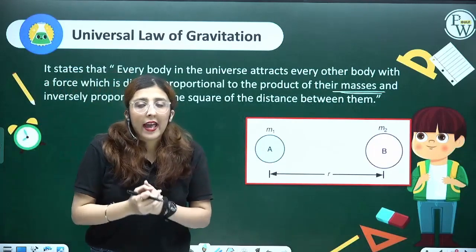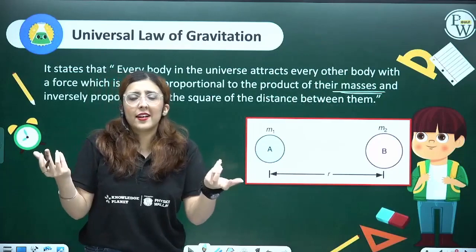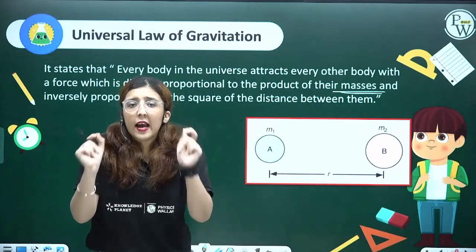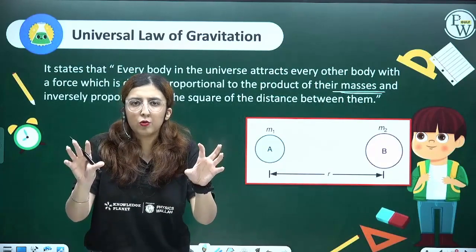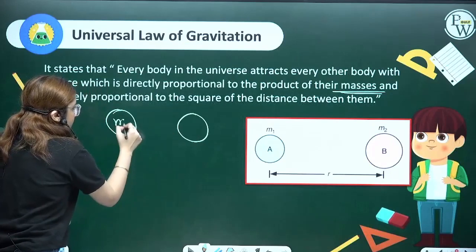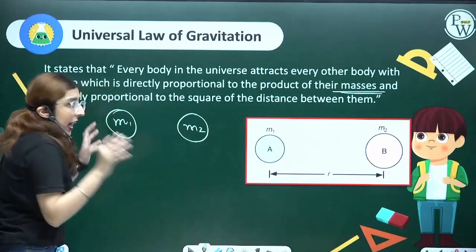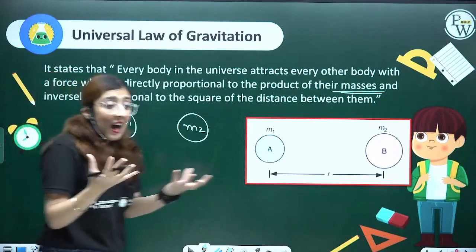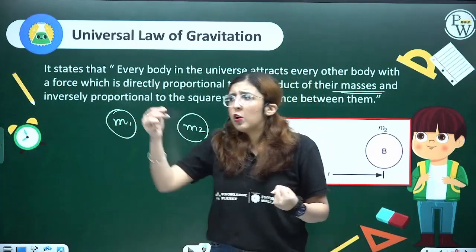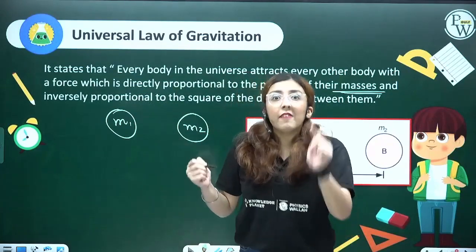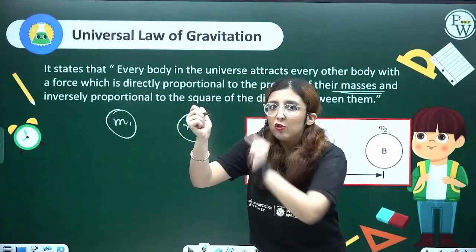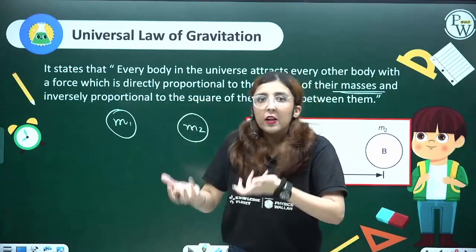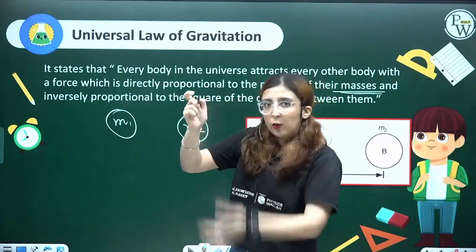Imagine two stones kept on a surface — will there be any force of gravitation between them? Of course, both stones have mass, so there will be gravitational force. Gravitation force is attractive in nature. If I drop this pen, it goes down to earth because there is a gravitation force between the pen and earth. Earth attracts the pen, and the pen attracts the earth — this is an action-reaction pair.